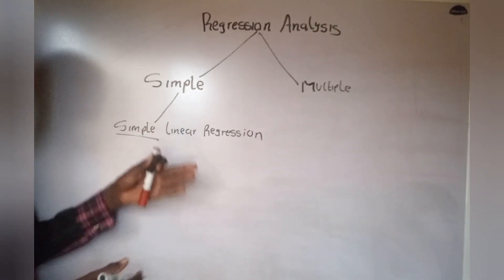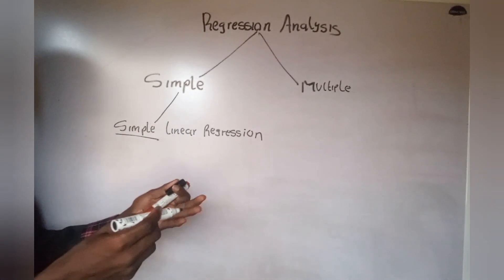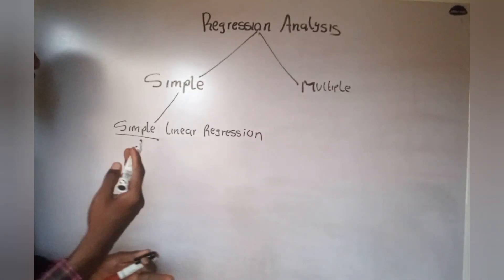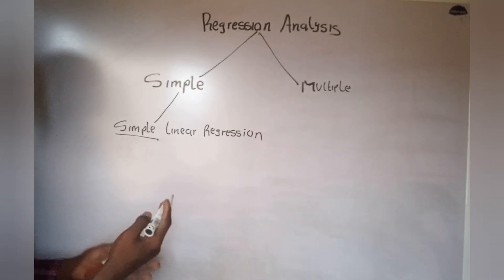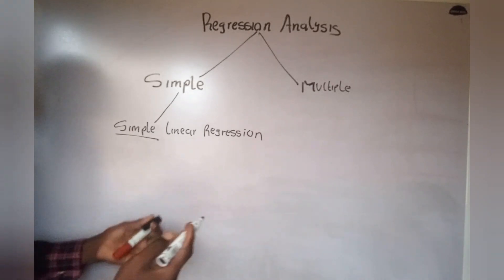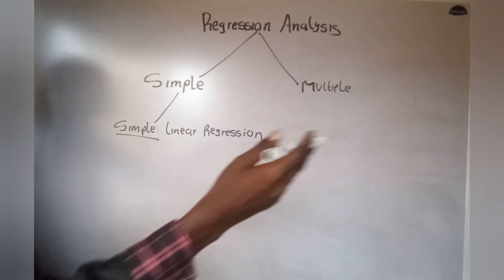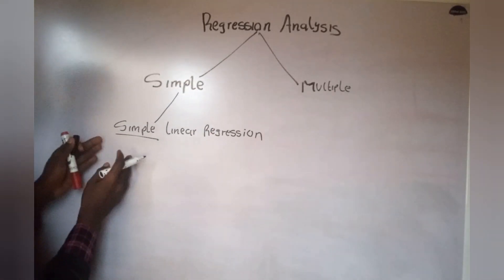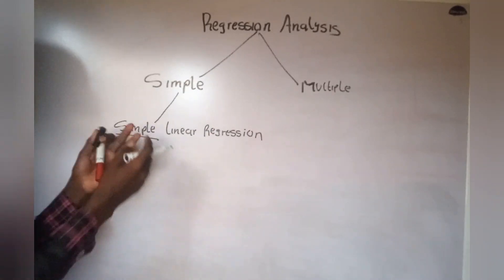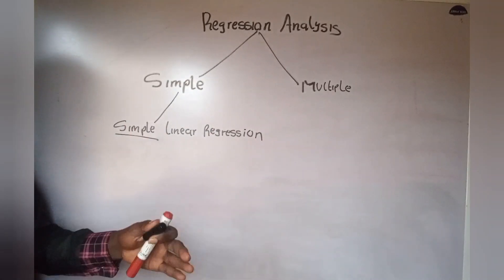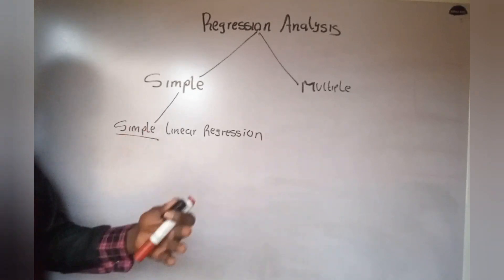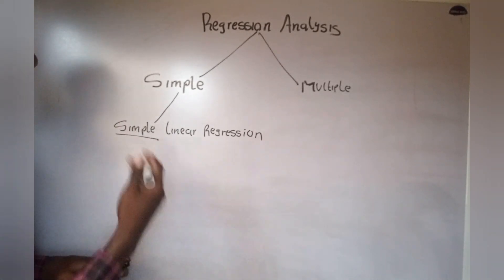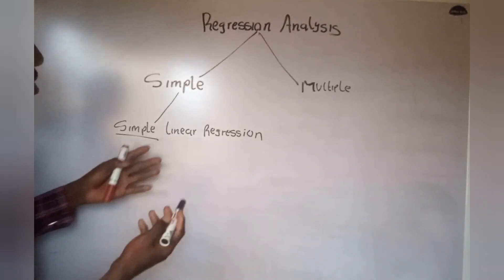And 'linear' means it is represented in the form of a straight line. After determining the relationship between these two variables, when we plot the graph we are going to have a linear graph — a straight line graph. That is why it is called simple linear regression.